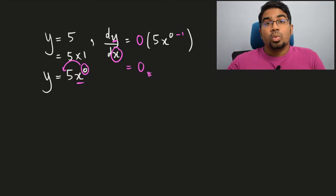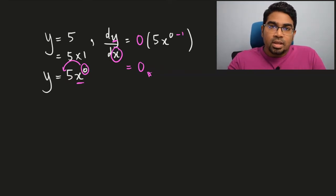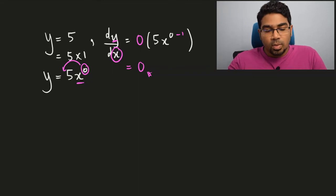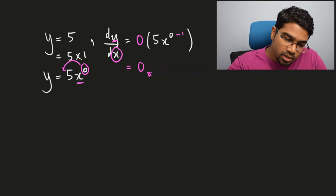And this will simply give us 0, because 0 multiplied by anything is just 0. So when y equals a number and you find dy/dx, it will simply be 0 — it doesn't matter what the number is, because whatever the number is, we will be multiplying it by 0.